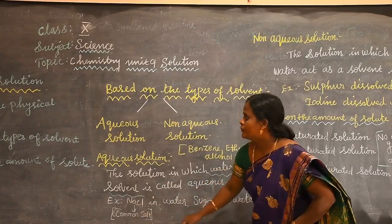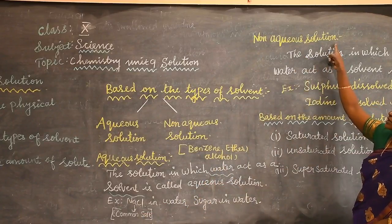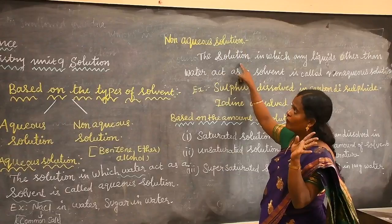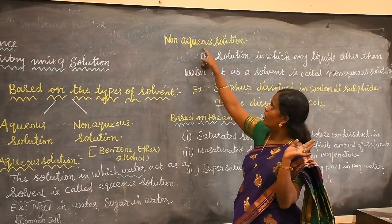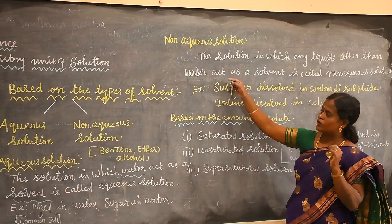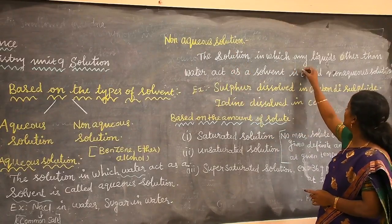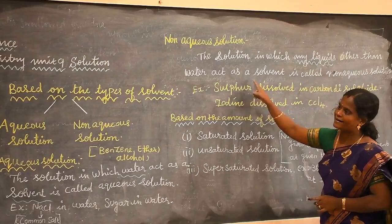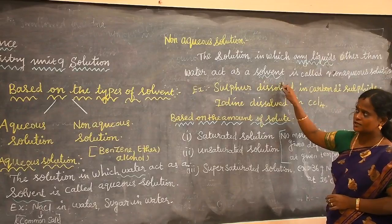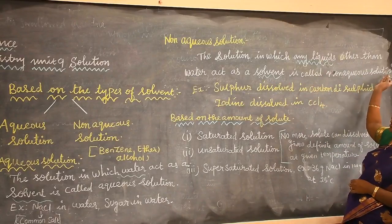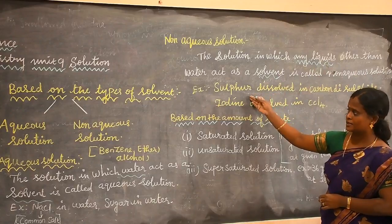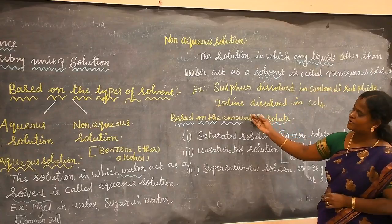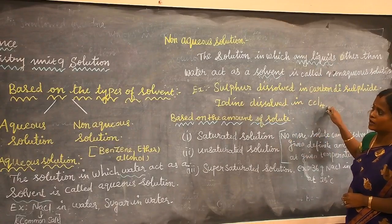Next, let us see non-aqueous solutions. Non-aqueous solutions means there is no water — any liquid other than water acts as a solvent. It is called a non-aqueous solution. For example, sulfur dissolved in carbon disulfide, and iodine dissolved in carbon tetrachloride.